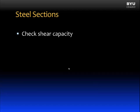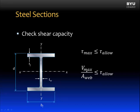For most beams which are long and slender, the controlling stress is the bending or flexure stress. But it is wise to always check that the shear capacity of the cross section is met. For shorter beams, sometimes the shear stress controls. To check the shear capacity, we use the relationship that the maximum shear stress in the beam must be less than or equal to the allowable shear stress. Typically we use the equation VQ/IT to calculate maximum shear stress. However, for wide flange sections, we can simplify this: the approximate maximum shear stress equals the maximum shear force divided by the area of the web, which is the depth D times the web thickness T_w.